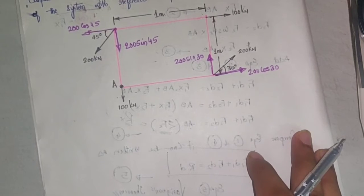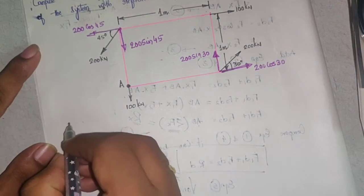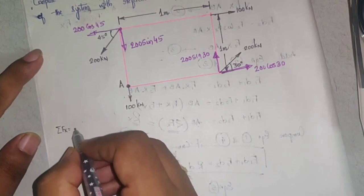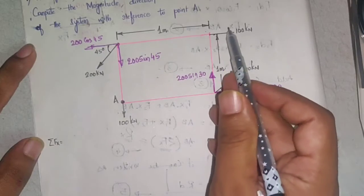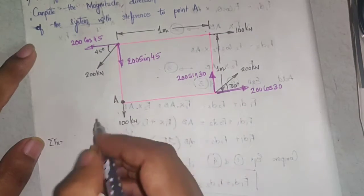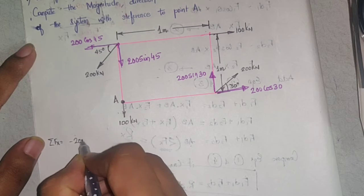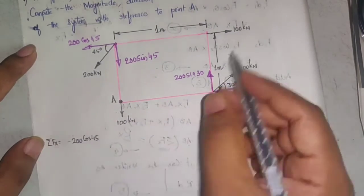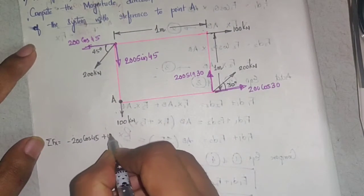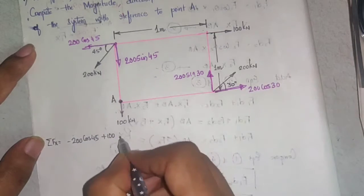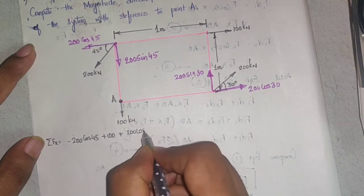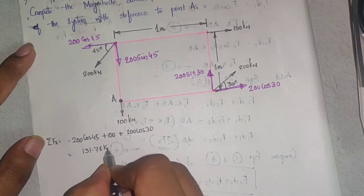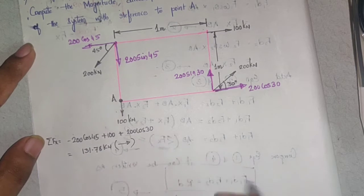Grouping all forces acting in the x direction: ΣFx. There are three forces. First: minus 200 cos 45, acting leftward. Second: plus 100, acting rightward. Third: plus 200 cos 30, also acting rightward. Solving this gives ΣFx = 131.78 kN, positive direction, so indicated rightwards.